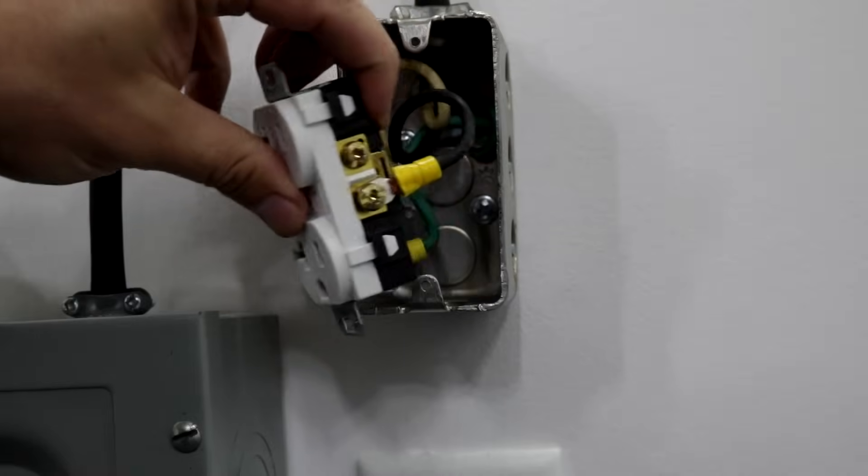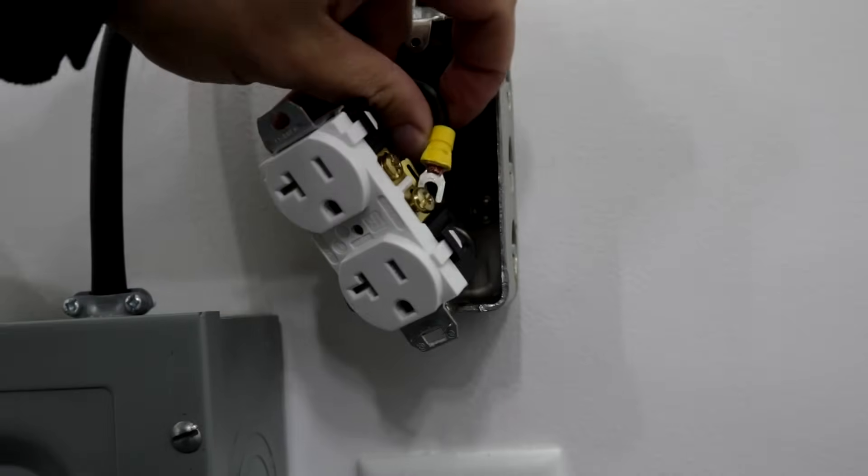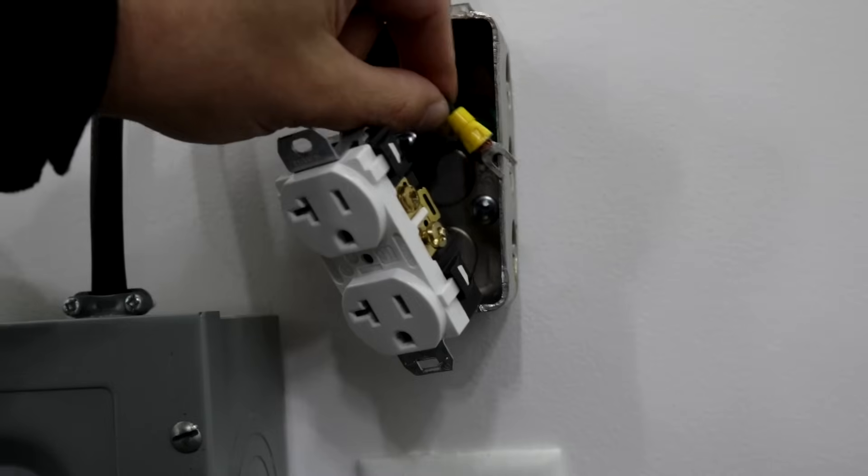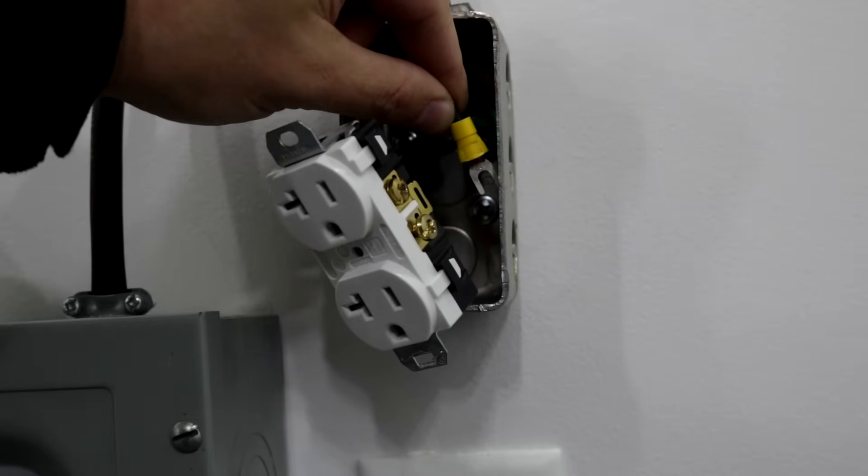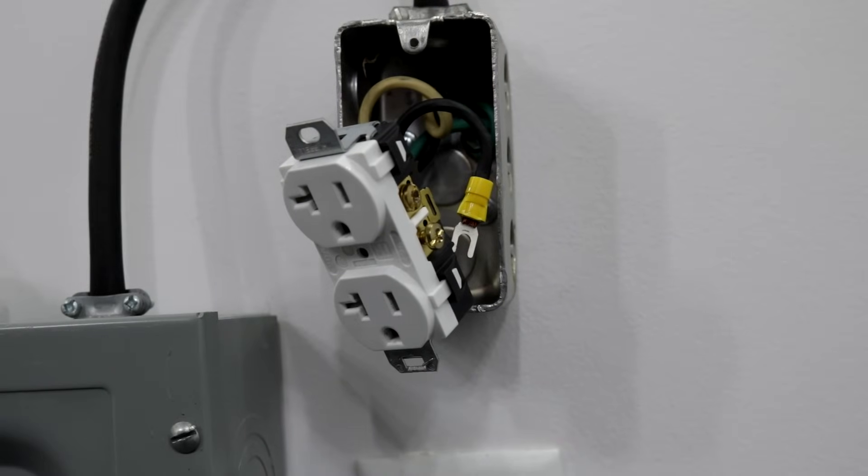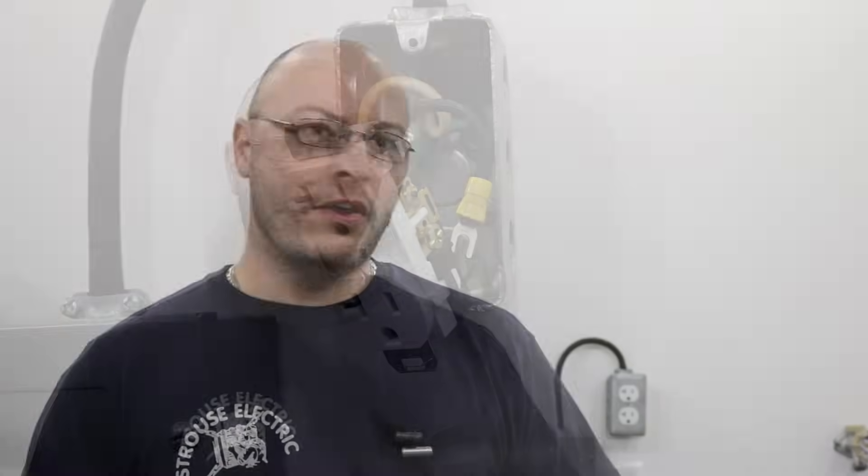You could also have a loose wire inside one of your receptacle boxes that could have come off the receptacle and hit the side of the box or hit the ground wire, and that will also short out your wiring and trip the breaker.